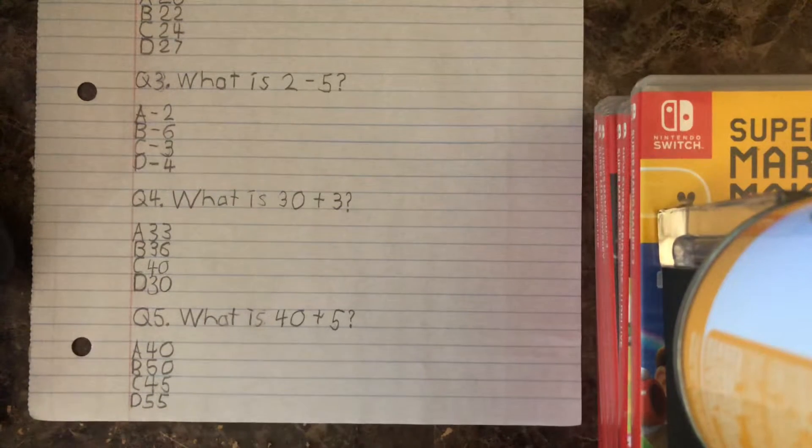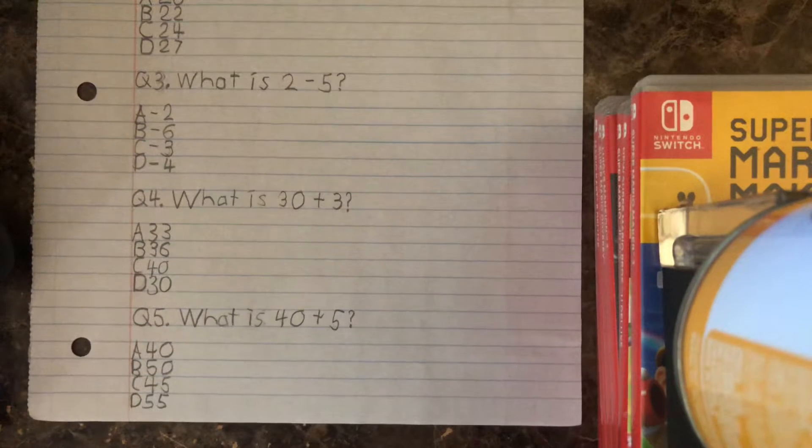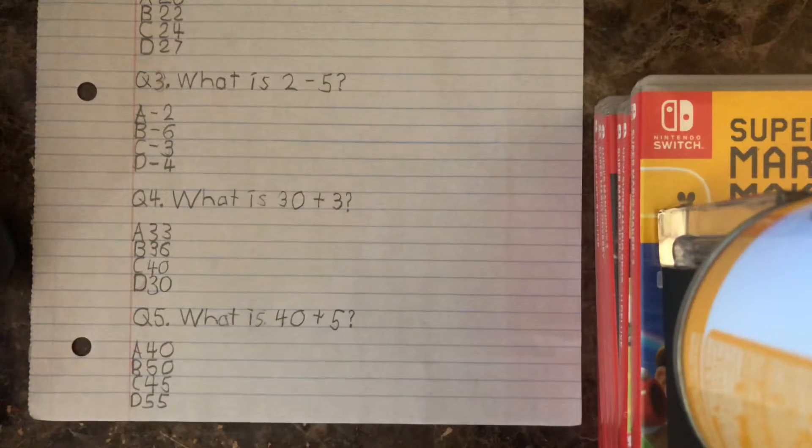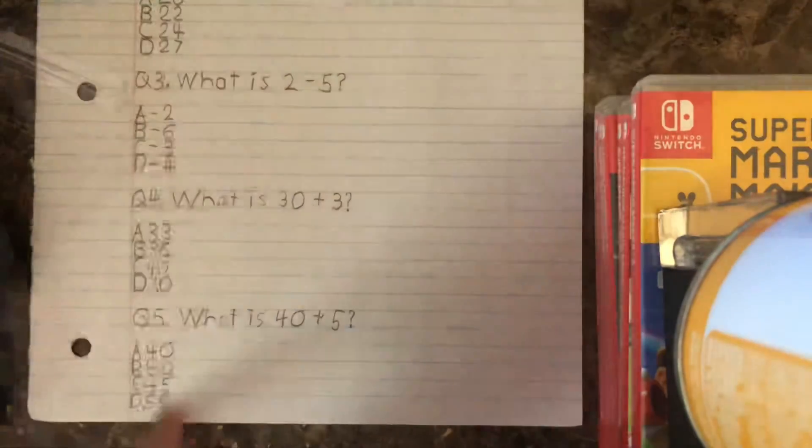Alright, last question. What is 40 plus 5? A, 40, B, 50, C, 45, or D, 55? What do you think guys? Just tell me, comment down below if you guessed this right. So, what do you think of the last question? Just let me know, comment down below. Alright, just tell me all those answers.